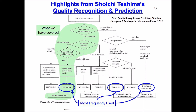Dr. Shuichi Teshima is the leading authority in MTS today. This flowchart from his latest book shows the MTS analysis process for all seven possible situations. The green highlighting is what we covered in our body dimension example. In all cases, the math is similar and straightforward vector analysis. A bachelor's degree engineer with an Excel spreadsheet can do it, which is one of the advantages of the MTS method.